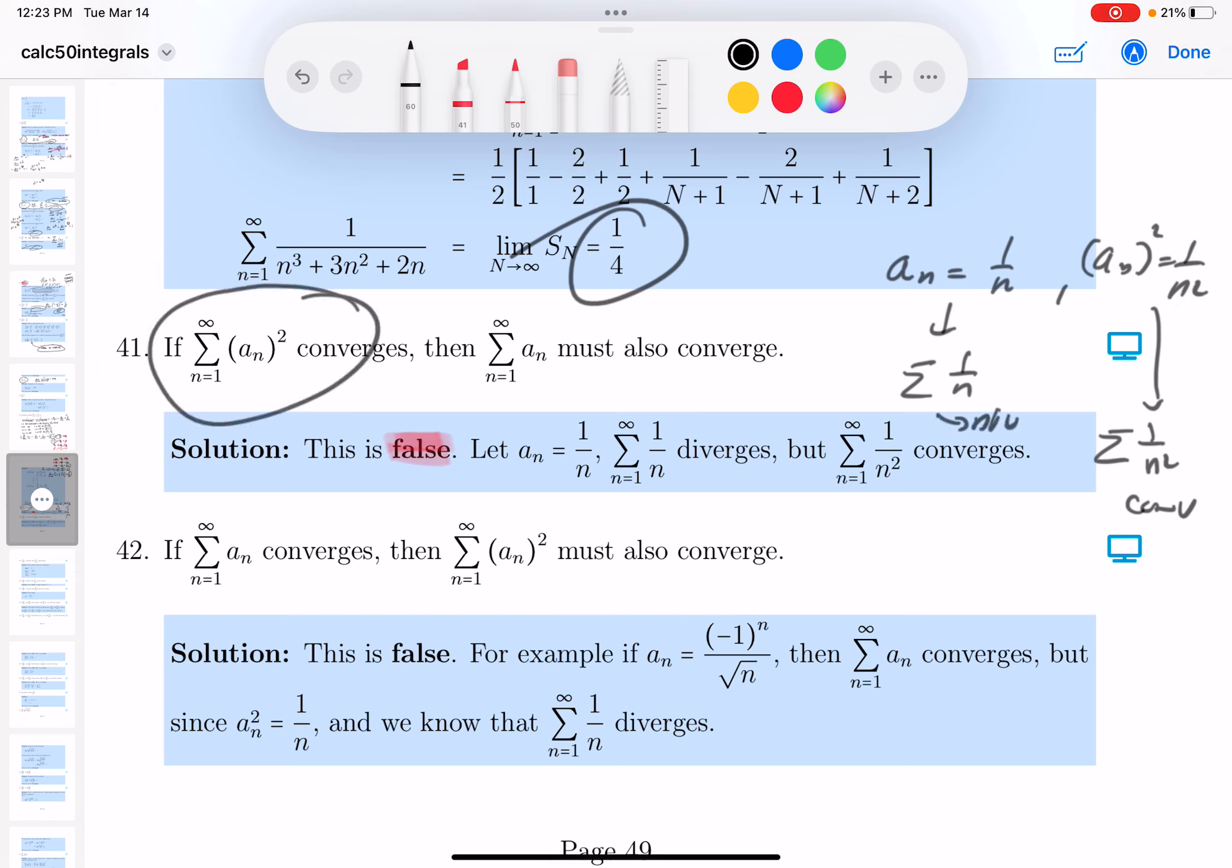So although this did converge, this didn't need to converge. It could have, but it didn't. I found the counterexample. So it's false. That simple. Thank you.